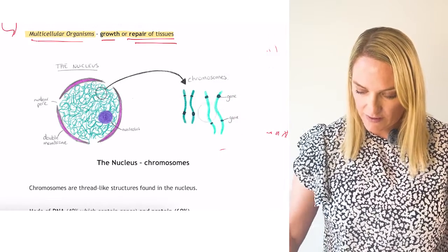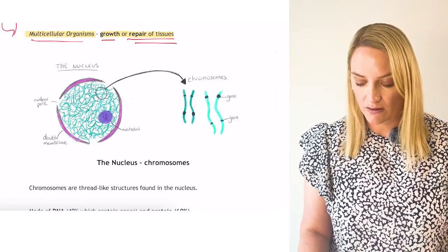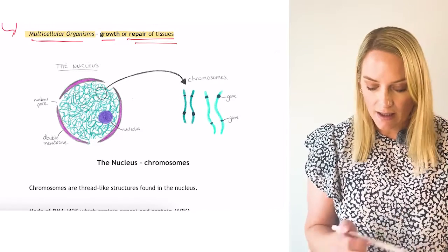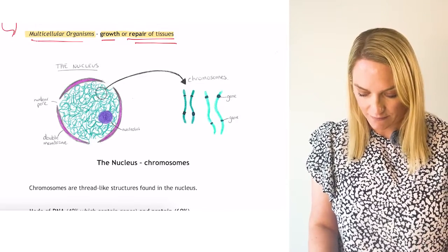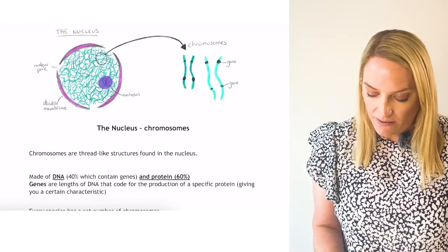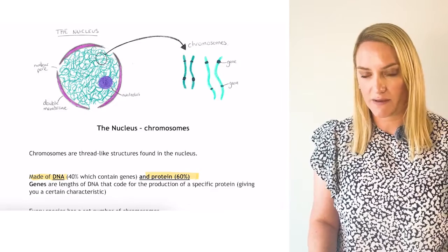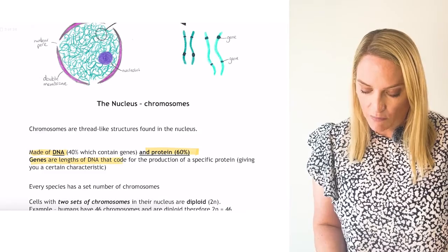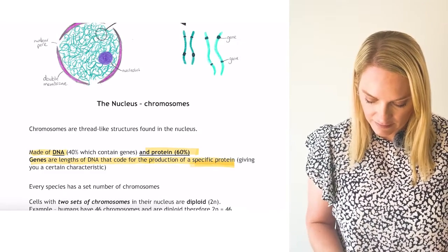Within our nucleus we have our chromosomes, which are made up of DNA and protein. We have nuclear pores which allow mRNA to leave, and a nucleolus where RNA is made. Chromosomes are thread-like structures made of 40% DNA and 60% protein. Along chromosomes we have genes, which code for the production of a specific protein.